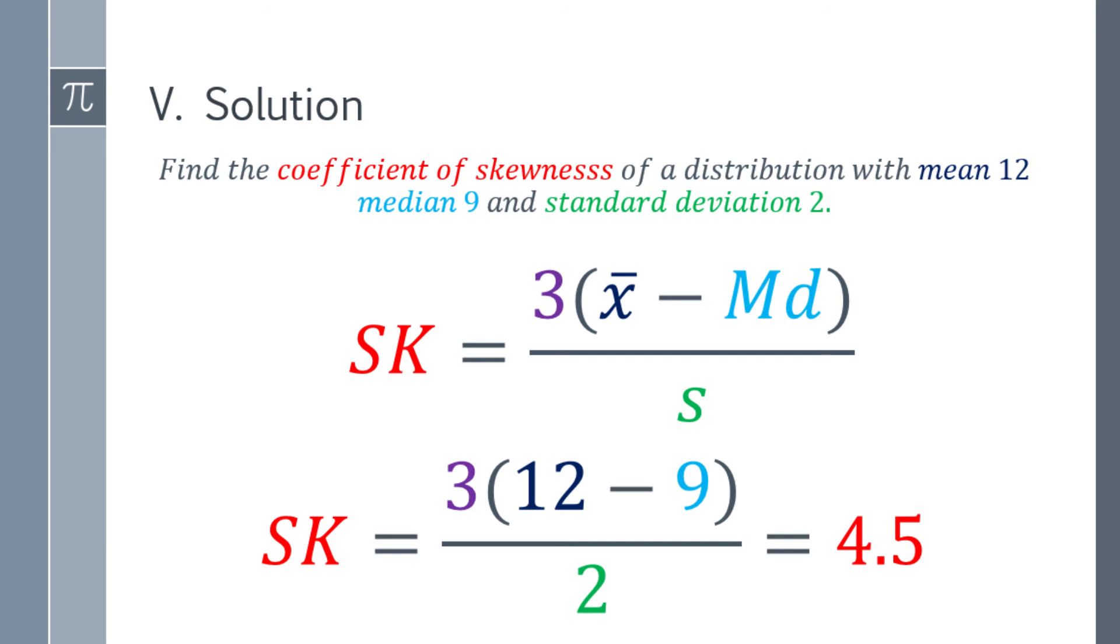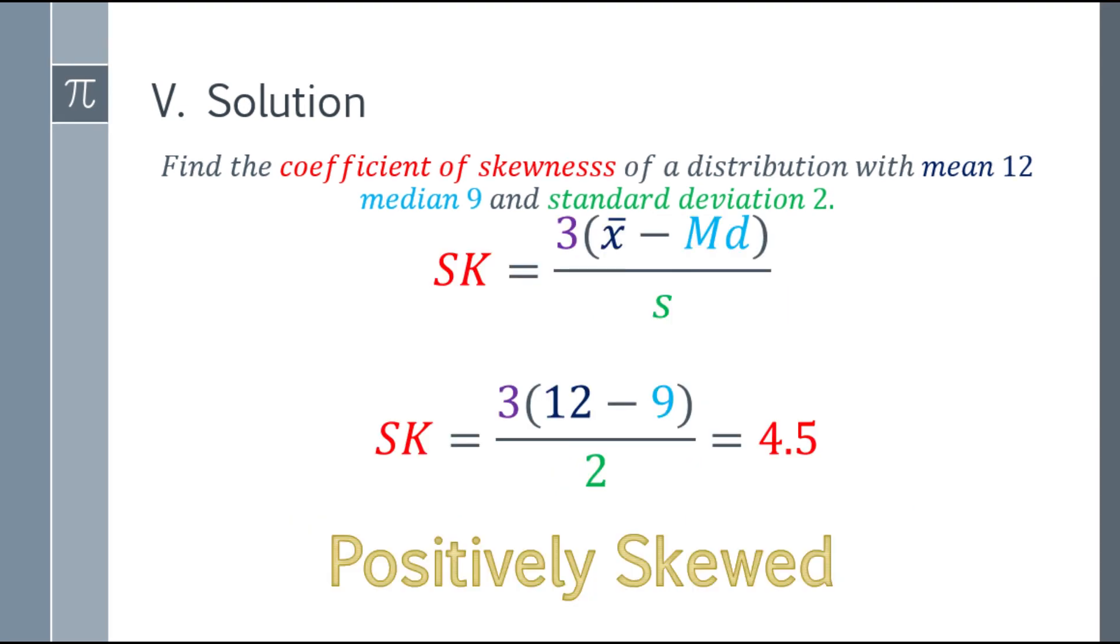Now that we have an answer of 4.5, a positive answer, then that is positively skewed.